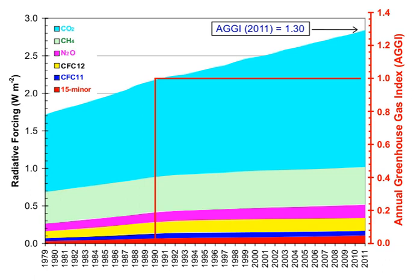Aside from water vapor, which has a residence time of about nine days, major greenhouse gases are well mixed and take many years to leave the atmosphere. Although it is not easy to know with precision how long it takes greenhouse gases to leave the atmosphere, there are estimates for the principal greenhouse gases.